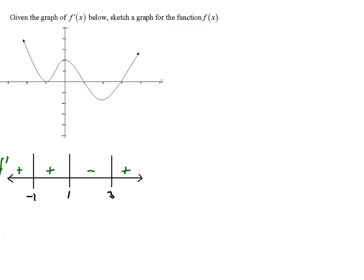What that tells us about F is that if F' is positive, then F is increasing. So F is increasing from negative infinity to negative 1, and also increasing from negative 1 to 1. F' is negative from 1 to 3, so F is decreasing. Then from 3 to infinity, F' is positive again, so F is increasing. Since F changes from increasing to decreasing at x equals 1, we have a relative max there. And it goes from decreasing to increasing at 3, so we have a relative min there.